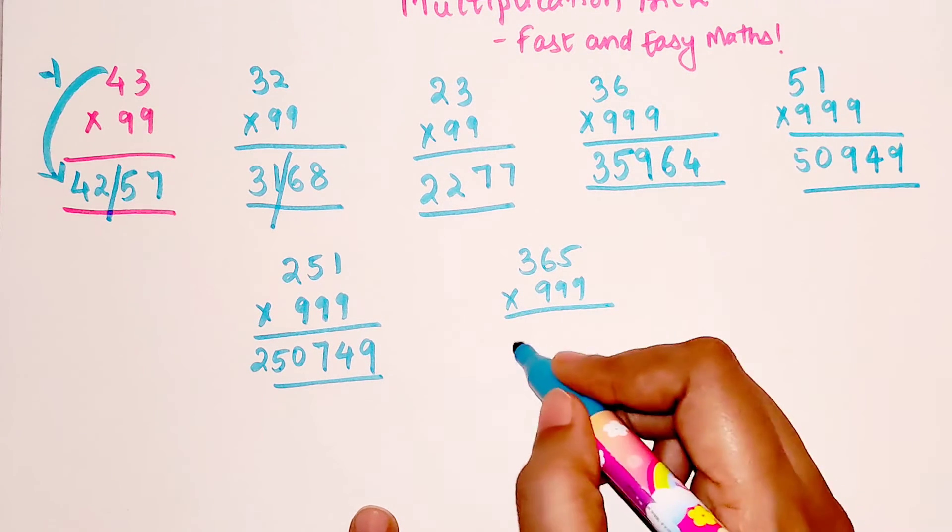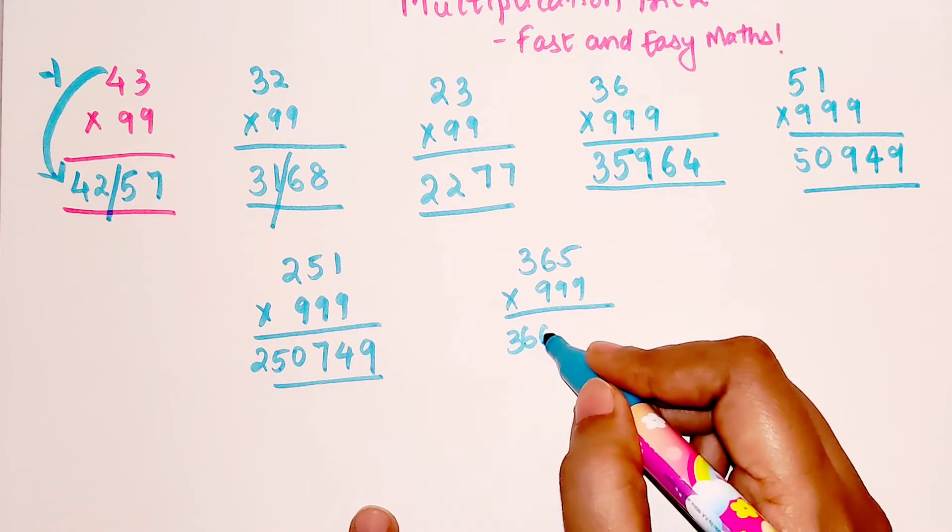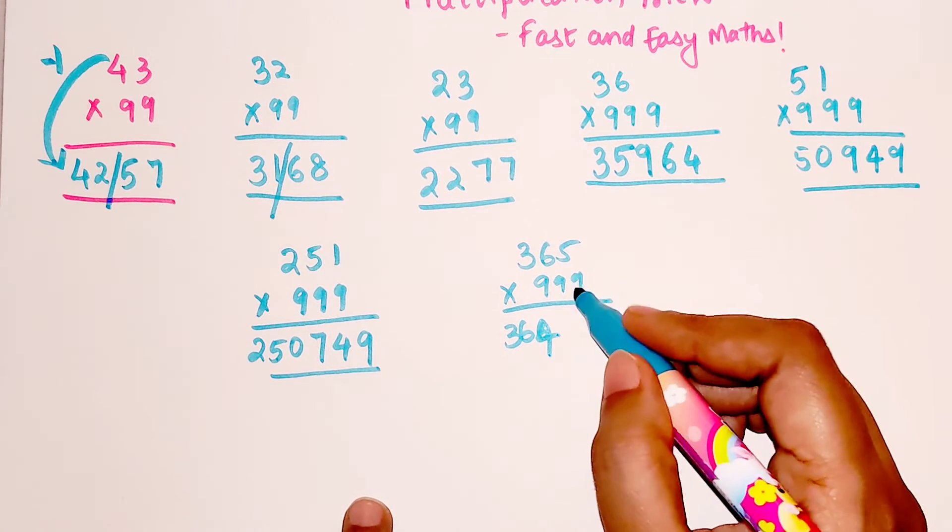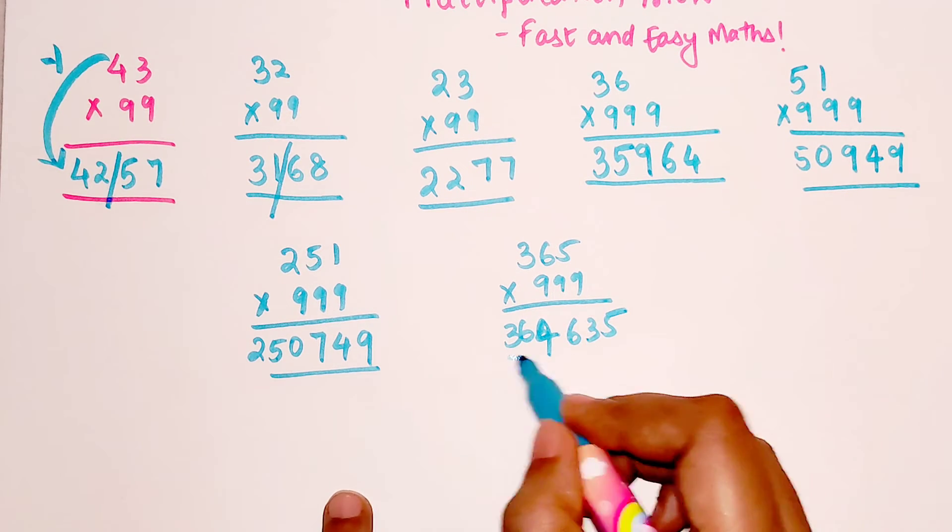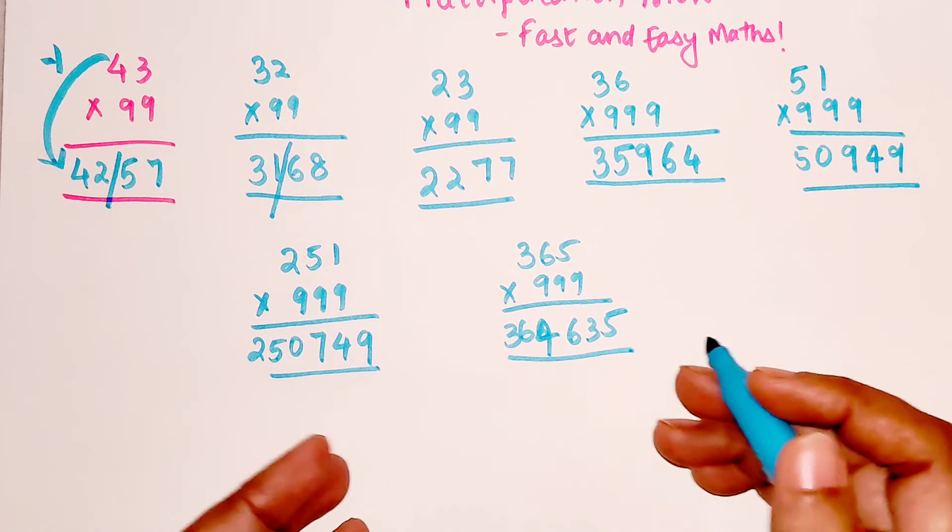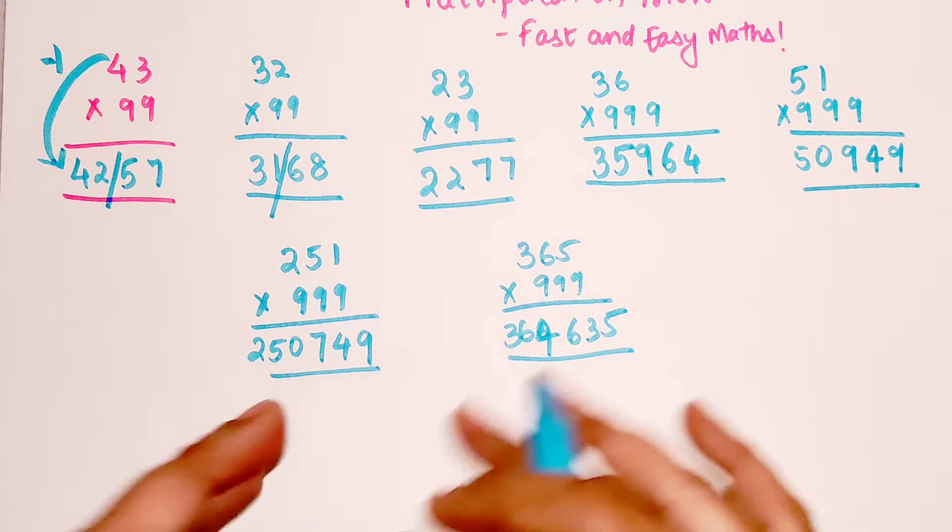That gets you 364, and then is what? 6, 3, and 5, right. So this is so simple. You saw how easy this entire thing became.